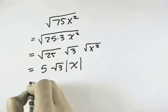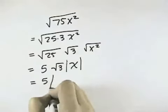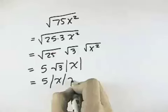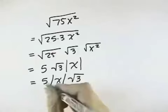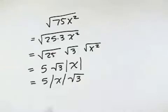And that's why we use the absolute value symbol. Sometimes also we might put the absolute value of x in front and leave the square root last. So it would be 5 times the absolute value of x times the square root of 3.